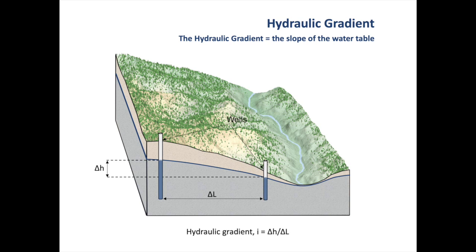The hydraulic gradient, which is usually shown as small i, is delta H divided by delta L. Notice that as both delta H and delta L are in meters, when we divide one by the other, i becomes dimensionless.